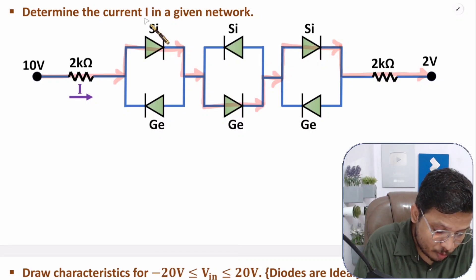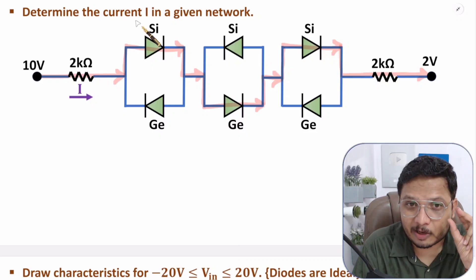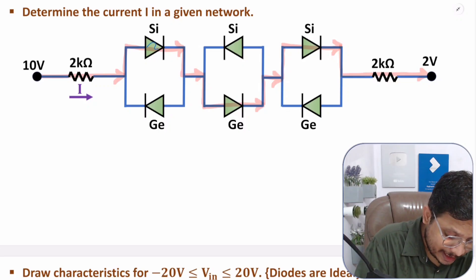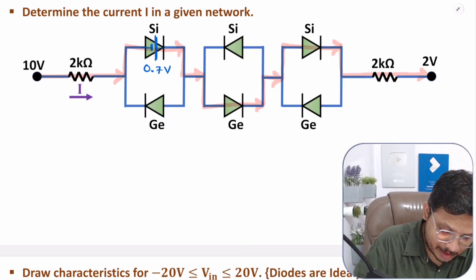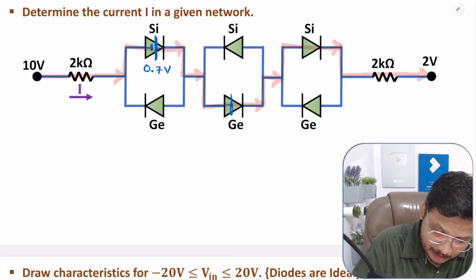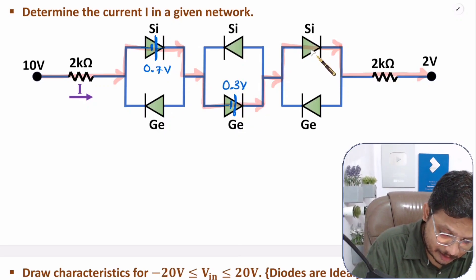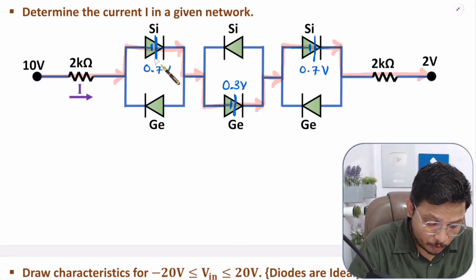Now to calculate how much current flows, you need to understand that when a diode comes in forward pass, there will be a cut-in voltage across it. The polarity is: anode has the negative terminal and cathode has the positive terminal. The potential drop across silicon is 0.7 V and across germanium is 0.3 V. So with silicon it is negative-positive, and the cut-in voltage is 0.7 V. That is how the cut-in voltage appears across the diode.